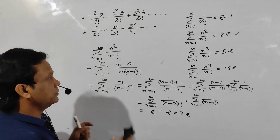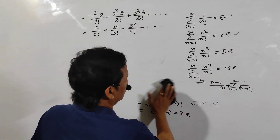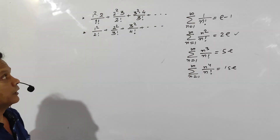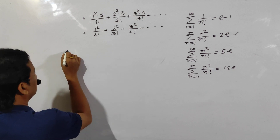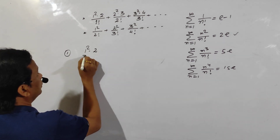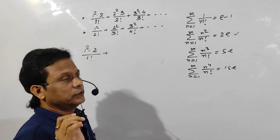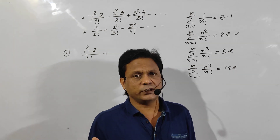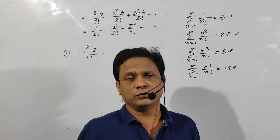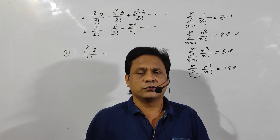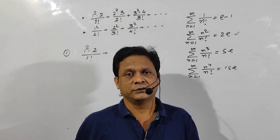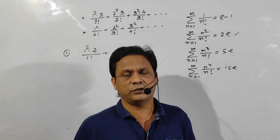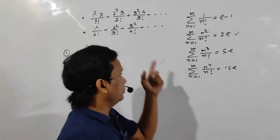Now I will tell you how to apply these formulas. See here the first problem. Some students write the summation starting from n equals 1 to infinity, some write from n equals 0 to infinity, some write from n equals 2 to infinity. Which one is correct? For the same problem we can write n equals 2, n equals 1, or n equals 0 to infinity. I will tell you how.